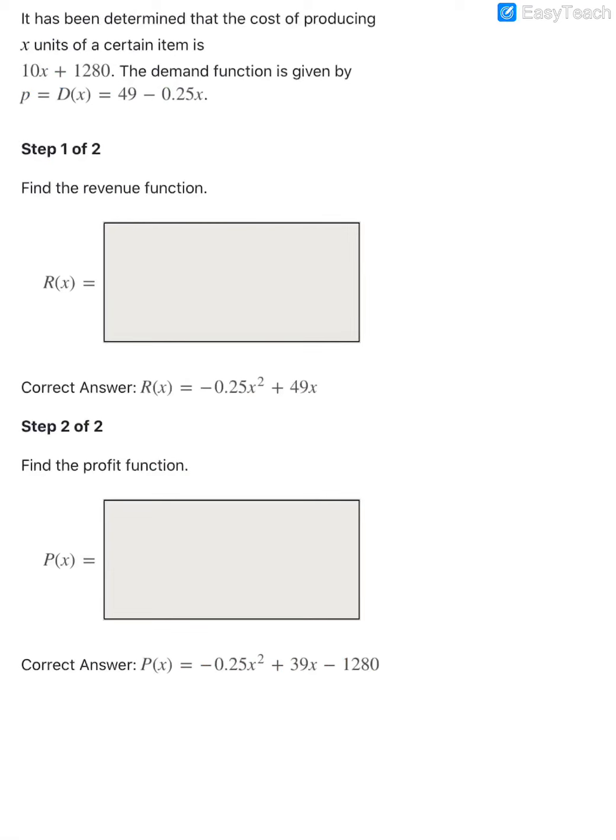On the next problem, it's been determined that the cost of producing x units of a certain item is 10x plus 1280, and they give us a demand function this time and that demand function in terms of p is equal to, and they're using d of x to say demand, and that is 49 minus 0.25 times x. Now when you're asked to find a revenue function,